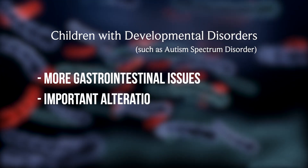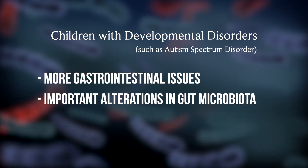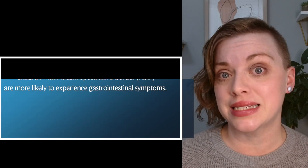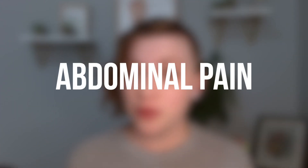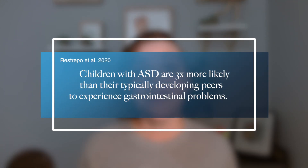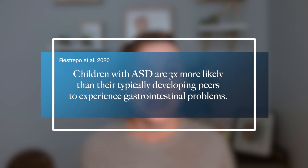Increasing research shows that there are more gastrointestinal issues and important alterations in the gut microbiota in children with developmental disorders, including autism spectrum disorder, which impacts their overall quality of life. Several studies report that children with autism spectrum disorder are more likely to experience gastrointestinal symptoms, including abdominal pain, bloating, diarrhea, constipation, and reflux than their typically developing peers. Restrepo and colleagues in 2020 found that children with ASD are three times more likely to experience gastrointestinal problems than their peers.